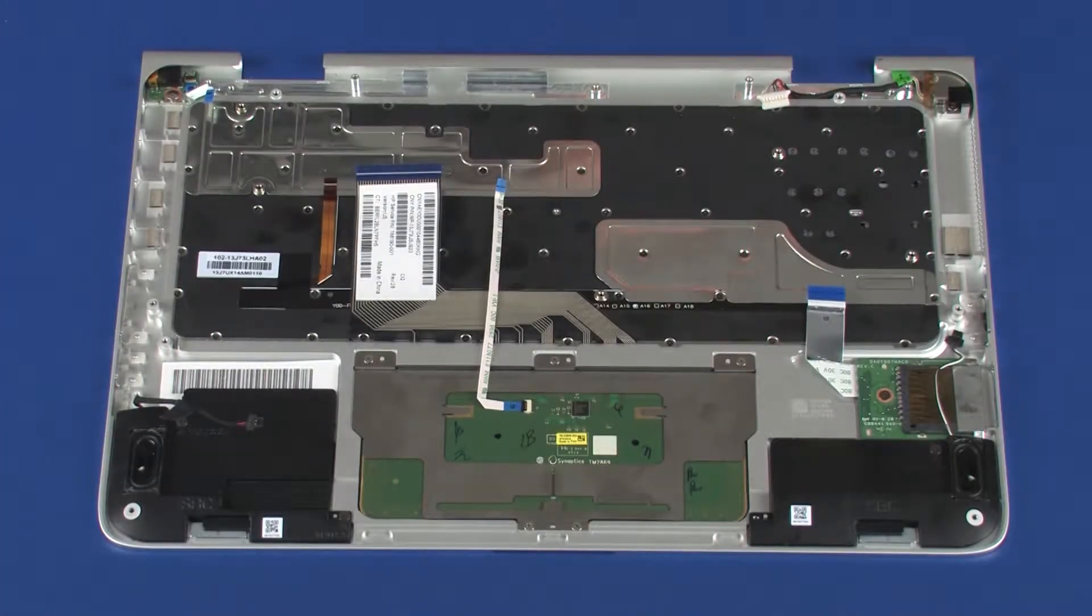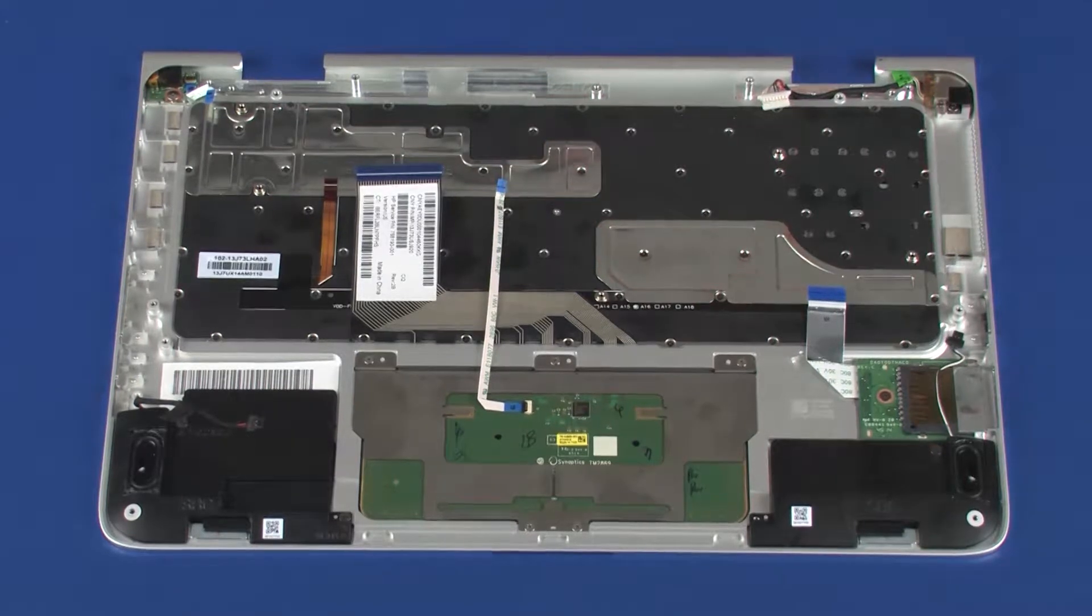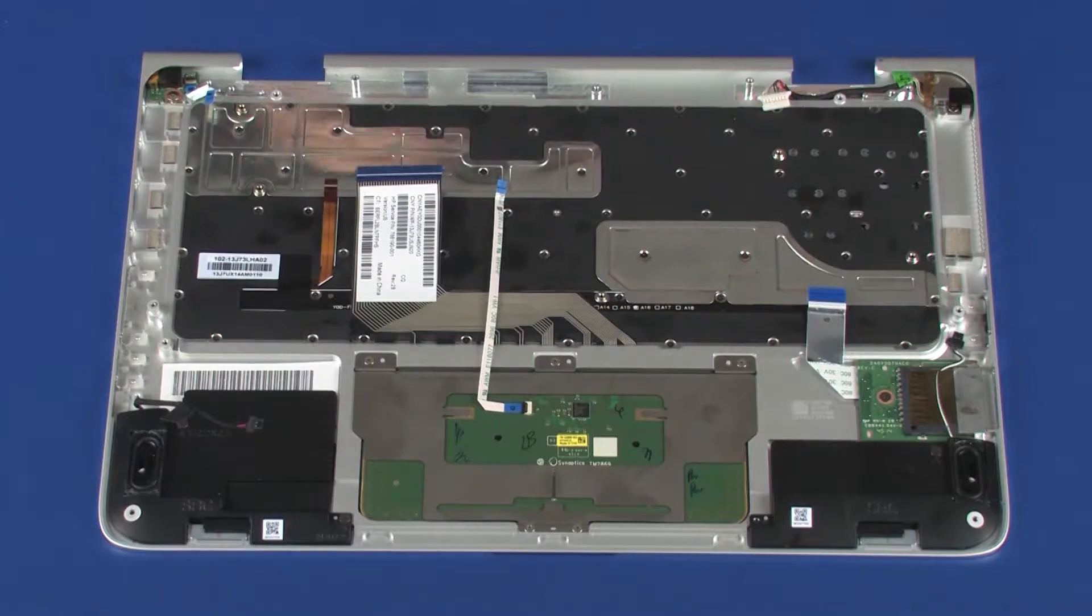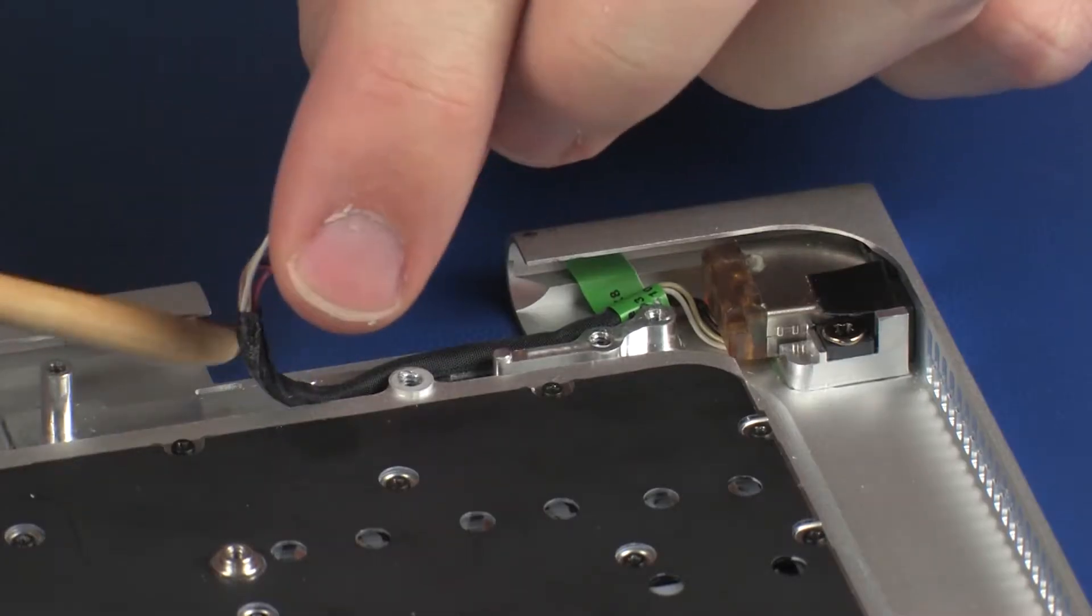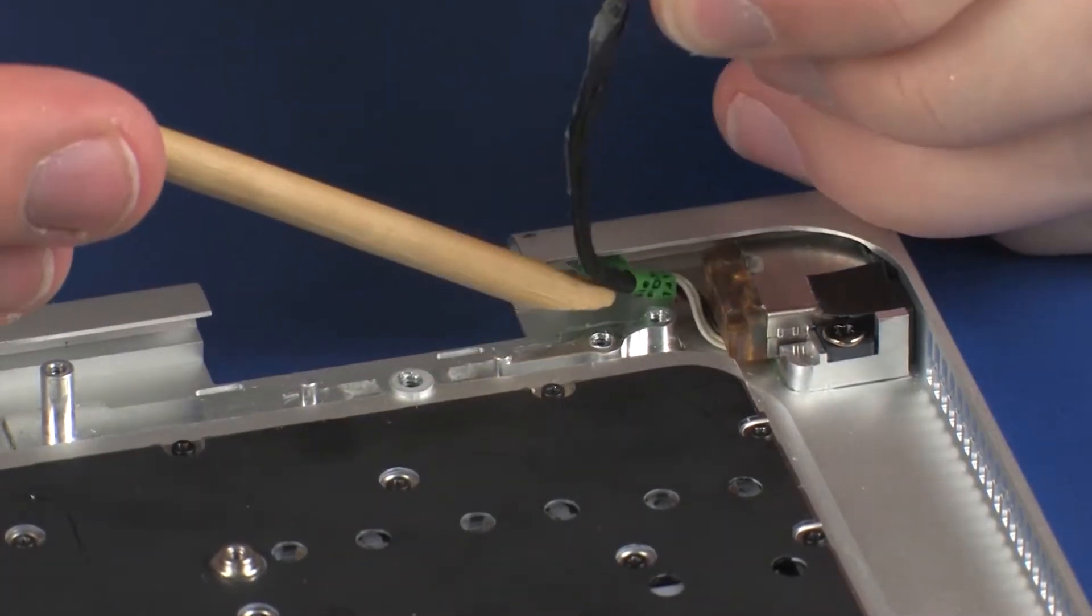Removal. Make careful note of the routing of the power connector cable for later replacement. Remove the power connector cable from the adhesive that secures it to the top cover.